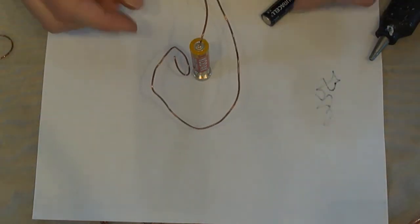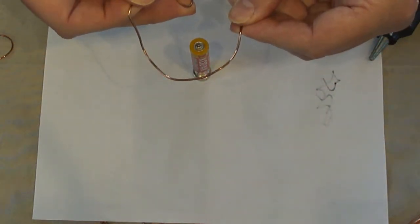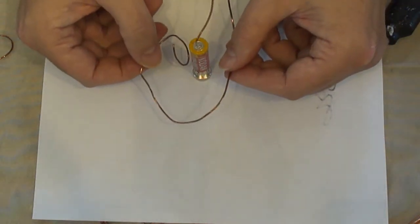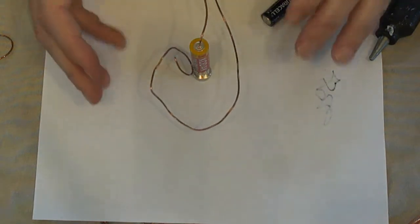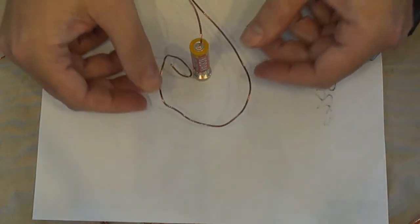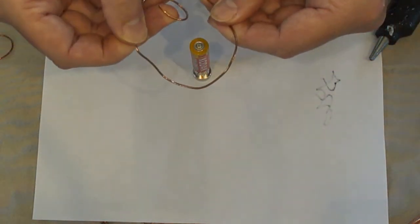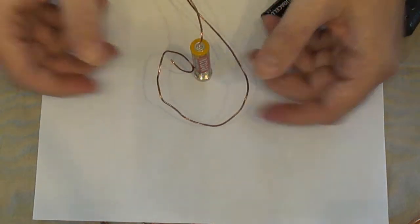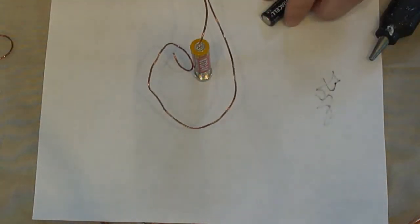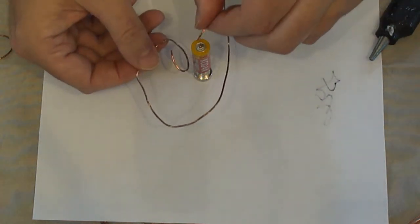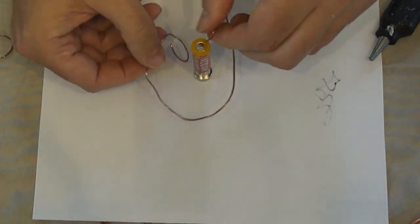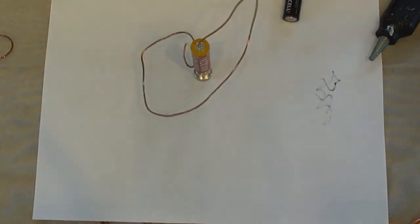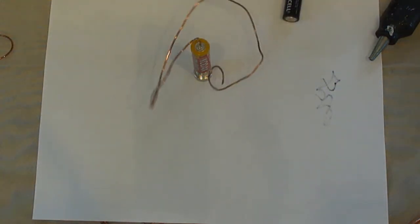But it does spin quite freely. What I'm going to do is bend this in just a little bit. A little bit more. Now it's not quite touching the magnet, so we'll go longer. And there we have one.